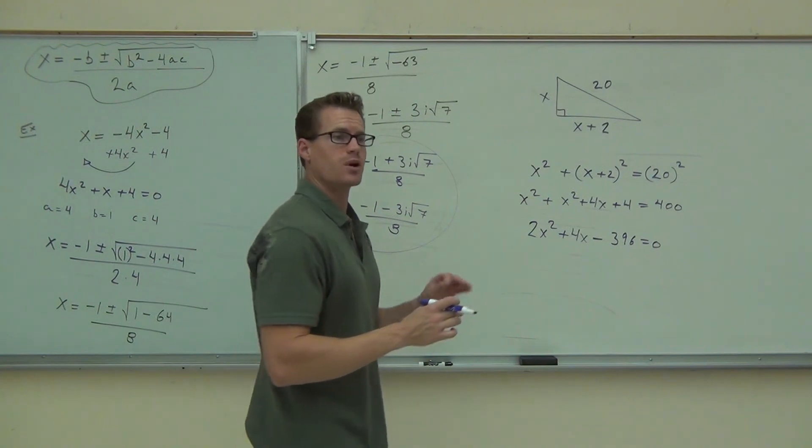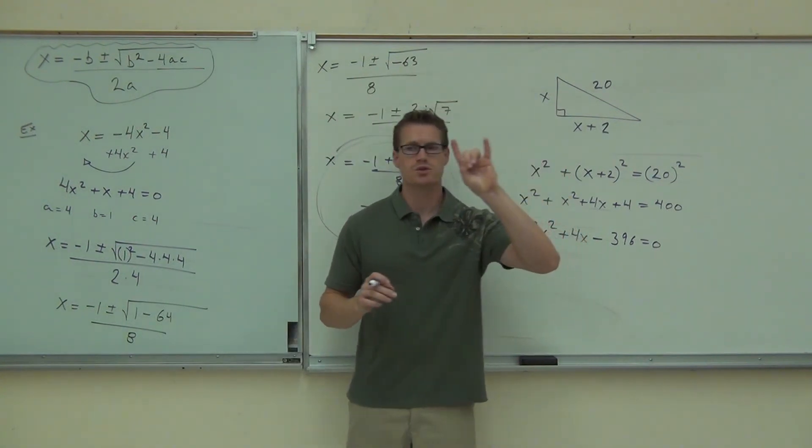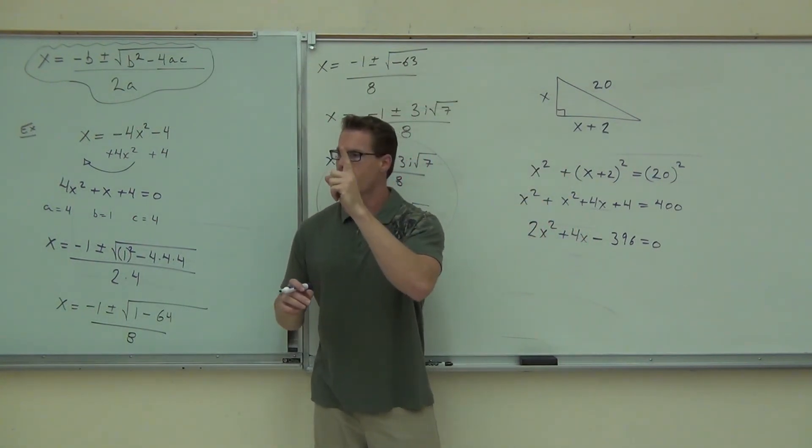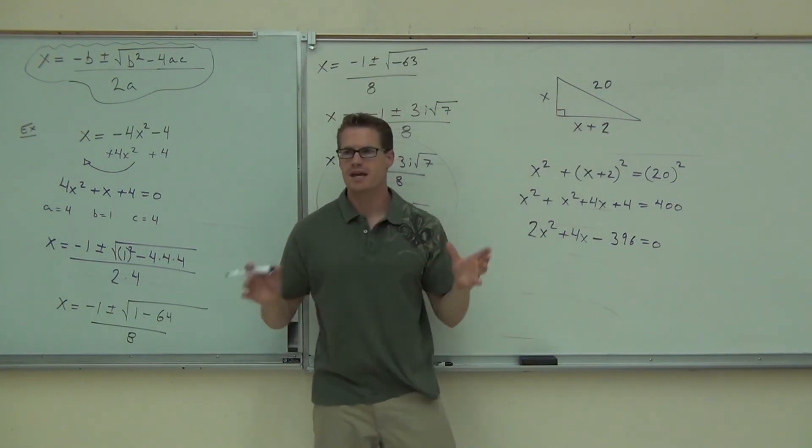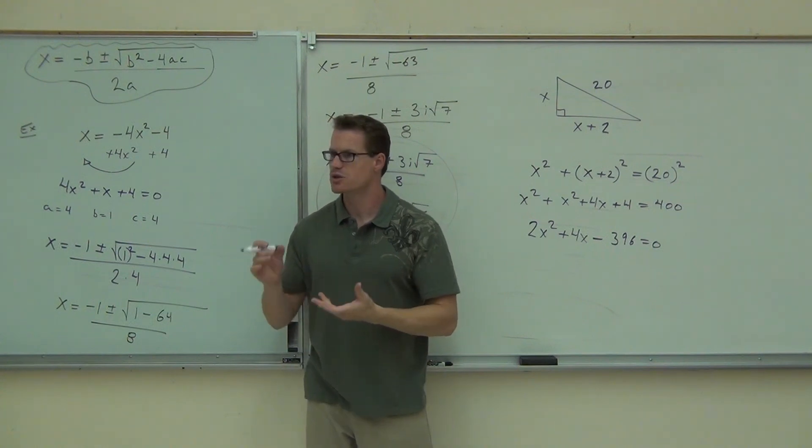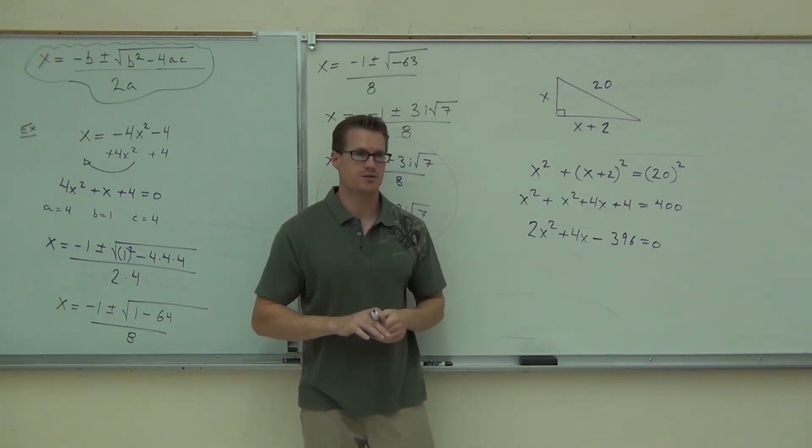You're going to have some big numbers, but it will work. Also, you're going to get two solutions. One positive and one negative. Is the negative going to work in this situation? We're going to omit the negative because you can't have a negative distance. So, you're going to take the positive one. That will be your answer for X.